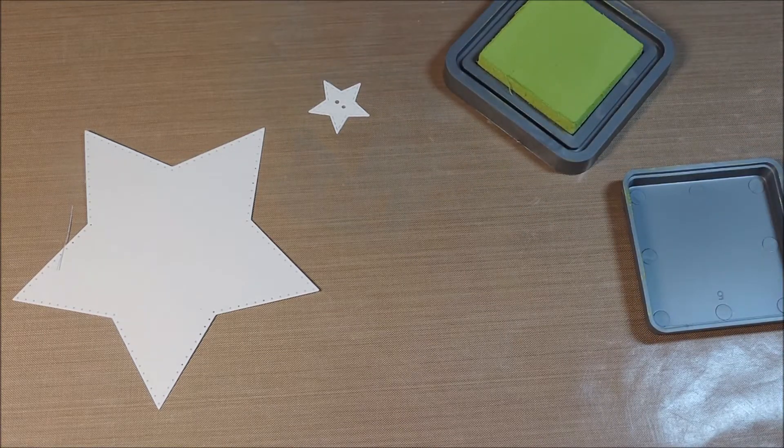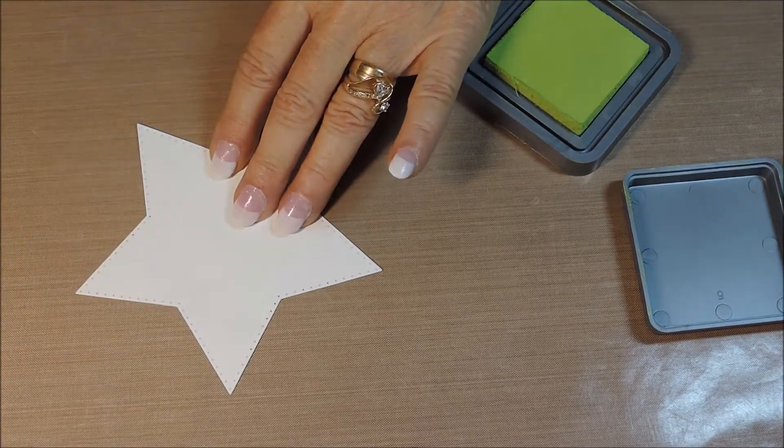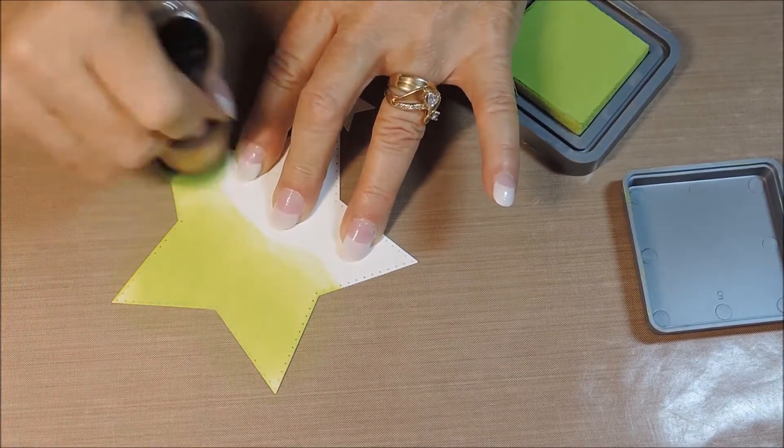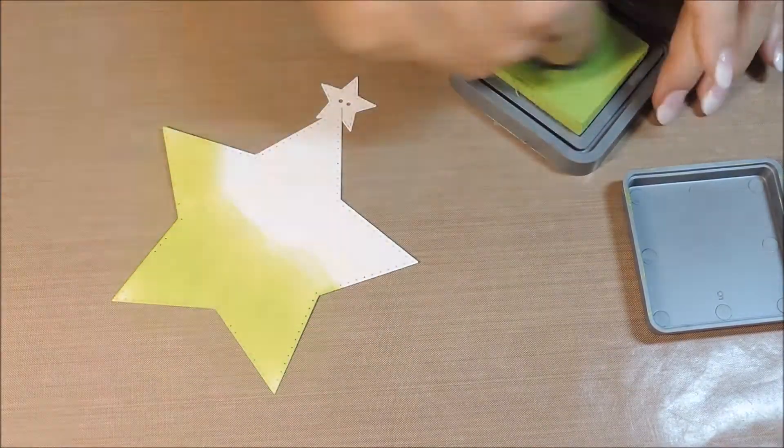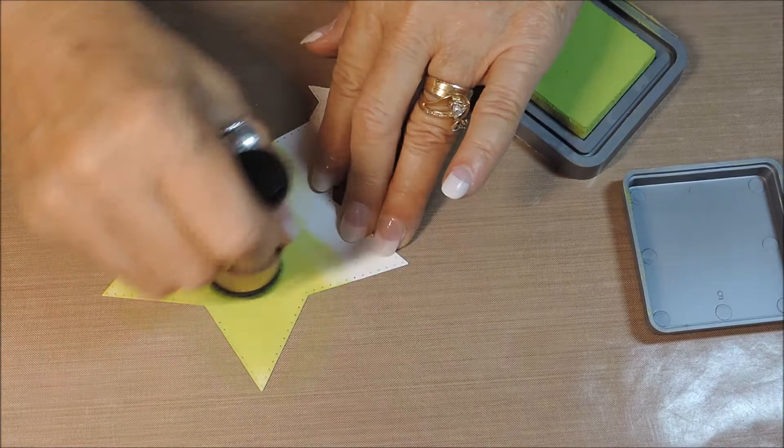I'm going to color all the pieces beginning with the largest star and the button with Distress Oxide ink, Twisted Citron. The other colors are Broken China, Wild Honey, and Wilted Violet. I like to rub the color on using a circular motion.